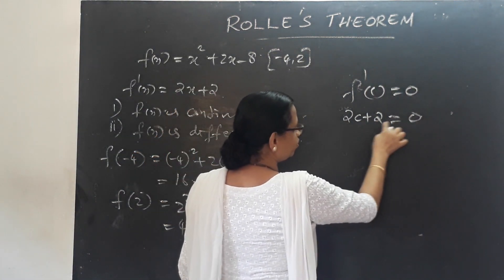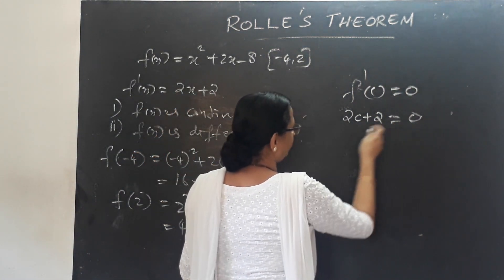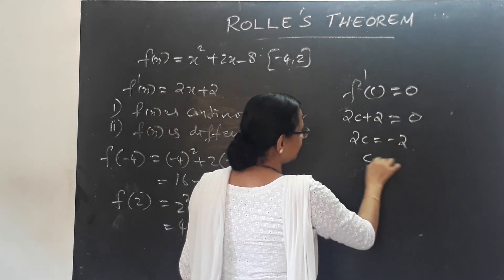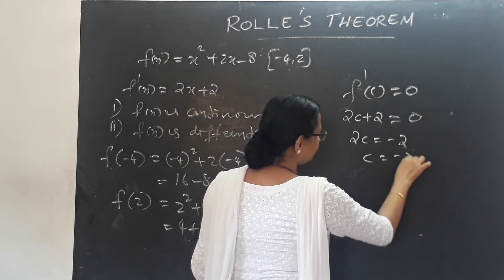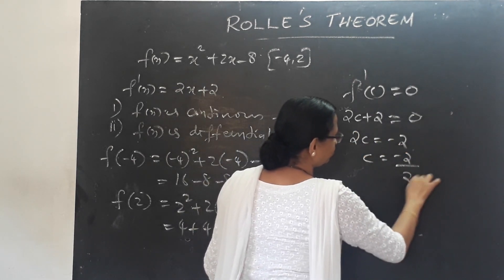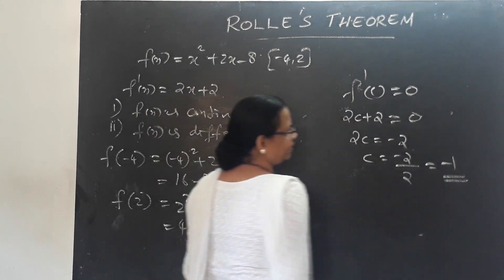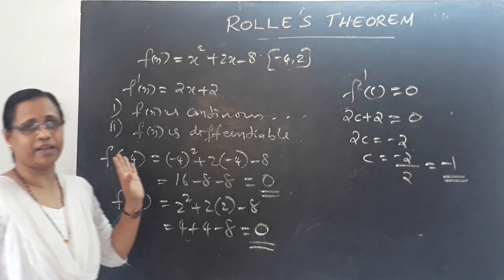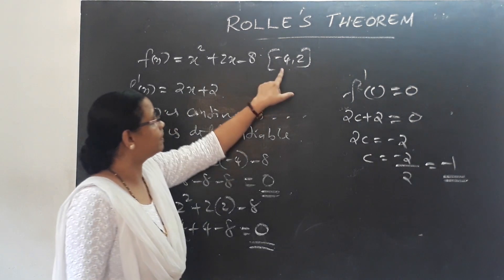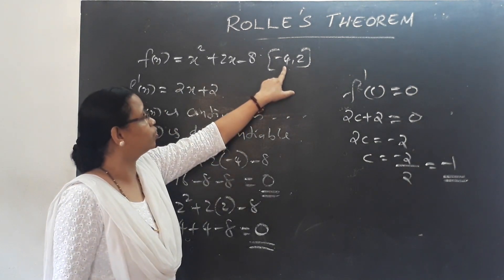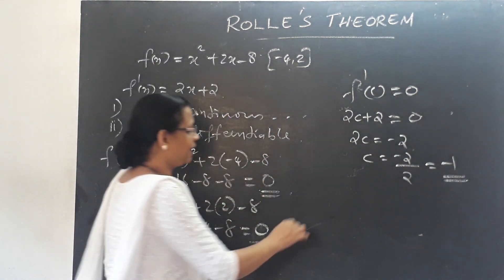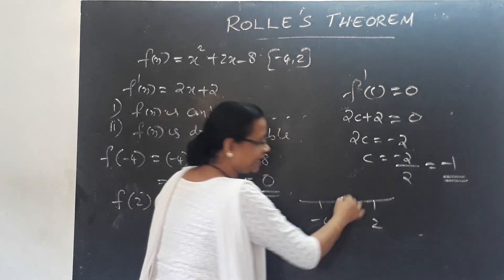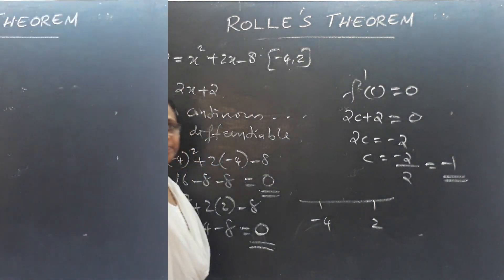Setting F'(C) = 0: 2C + 2 = 0, so 2C = −2, giving C = −1. Since −1 lies in the open interval (−4, 2), Rolle's Theorem is verified. F(−4) equals F(2), both equal to zero, confirming the third condition.